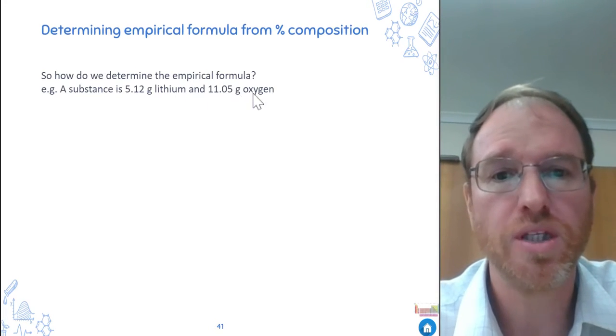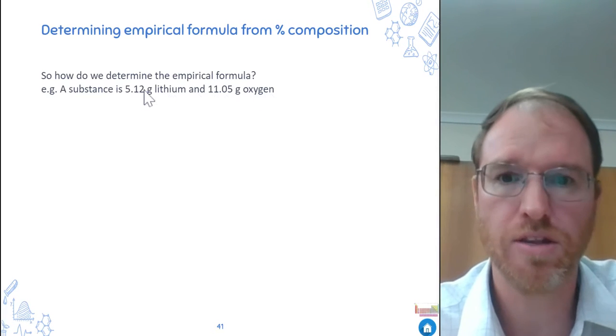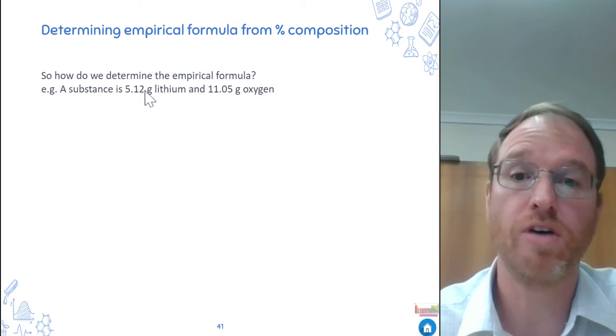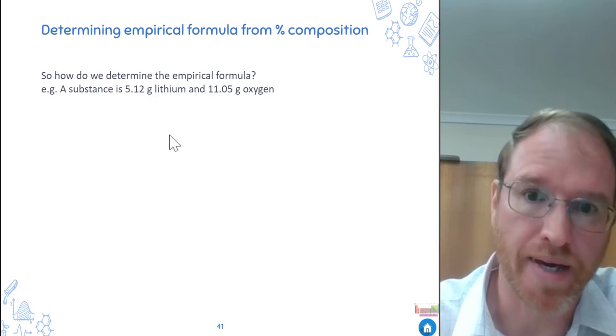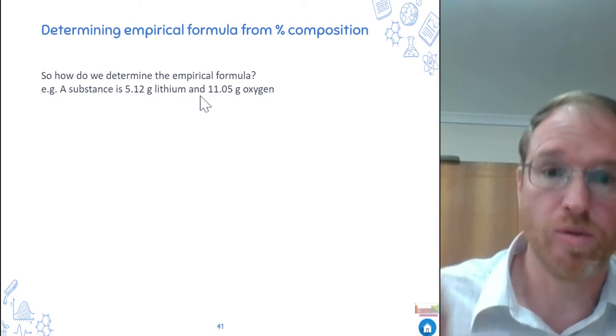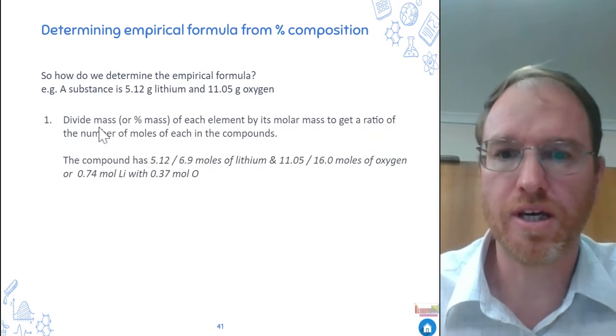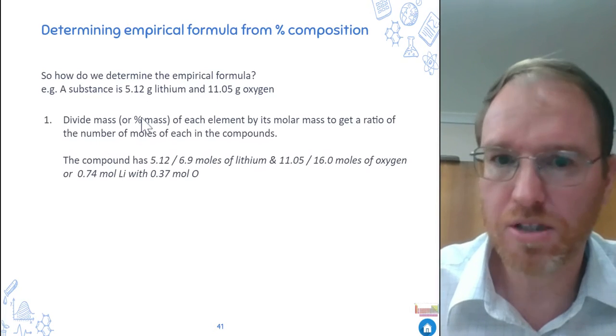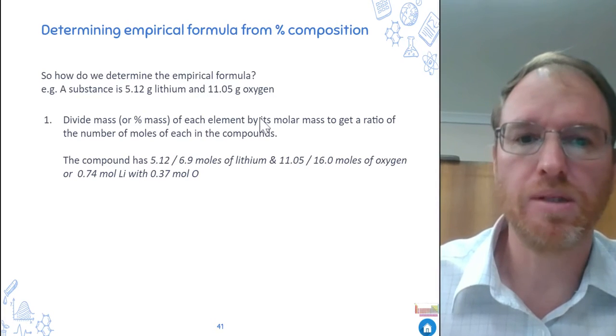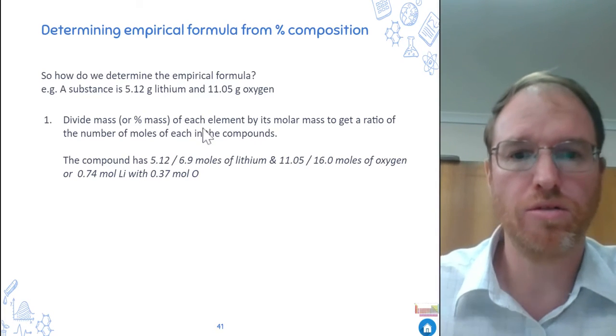Well, the first thing is we need to find the ratio of moles of each thing. And to get the moles, we need to divide that mass by the molar mass. Then we'll get a ratio of moles. Remember, we're never working in mass, we've got to change things to moles. So first step, divide the mass or percentage mass, if that's what you've got, of each element by its molar mass to get a ratio of moles.